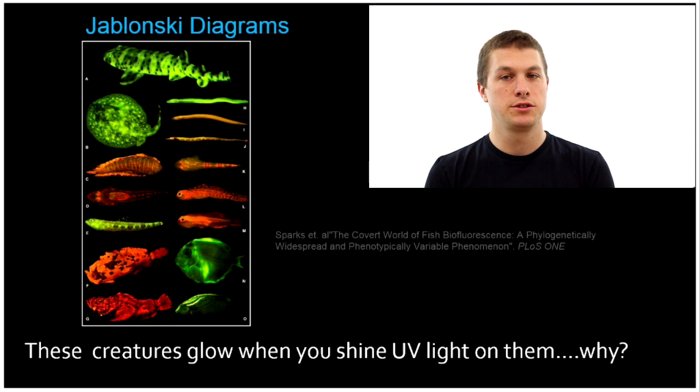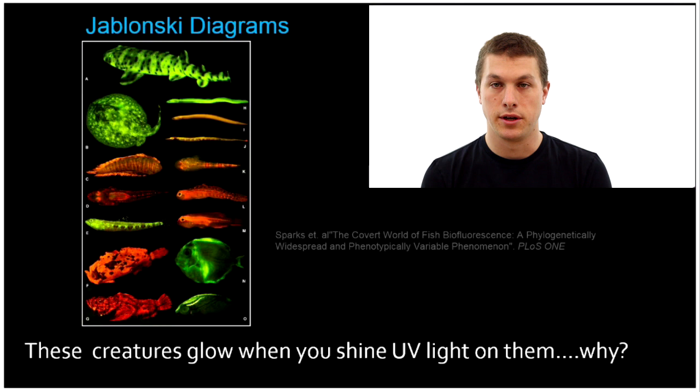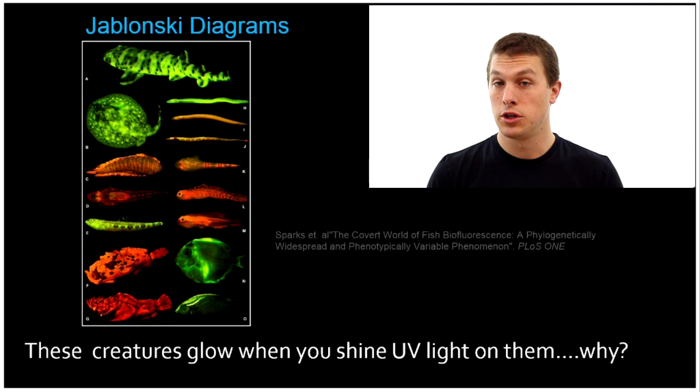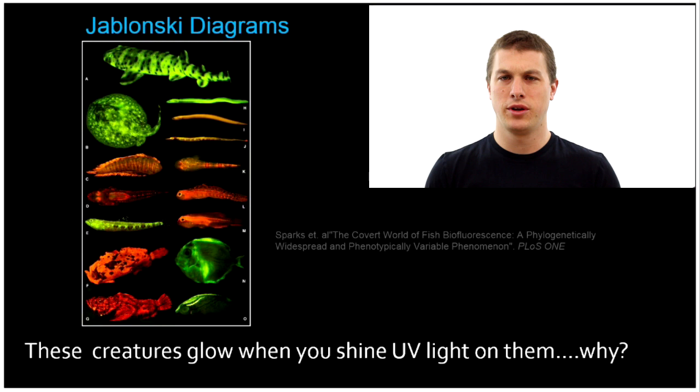If you take a look at all these brightly colored fish down here, they're all fluorescing, they're all giving off light in the visible. But to do this, to get them to glow, we had to shine UV light on these fish. You might wonder, what's going on here? Why is it that you put high energy light on the fish, and then they glow in the visible? Jablonski diagrams are going to help us understand that process.